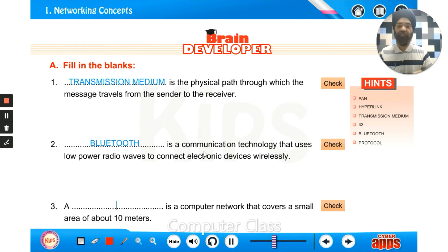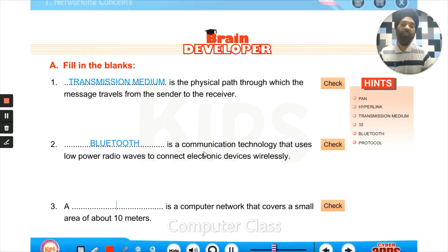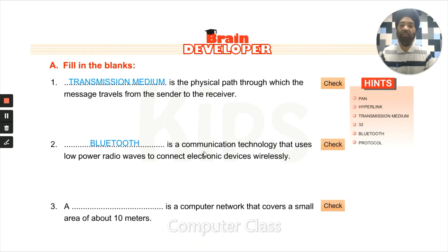A blank is a computer network that covers a small area of about 10 meters. The answer is PAN — Personal Area Network.